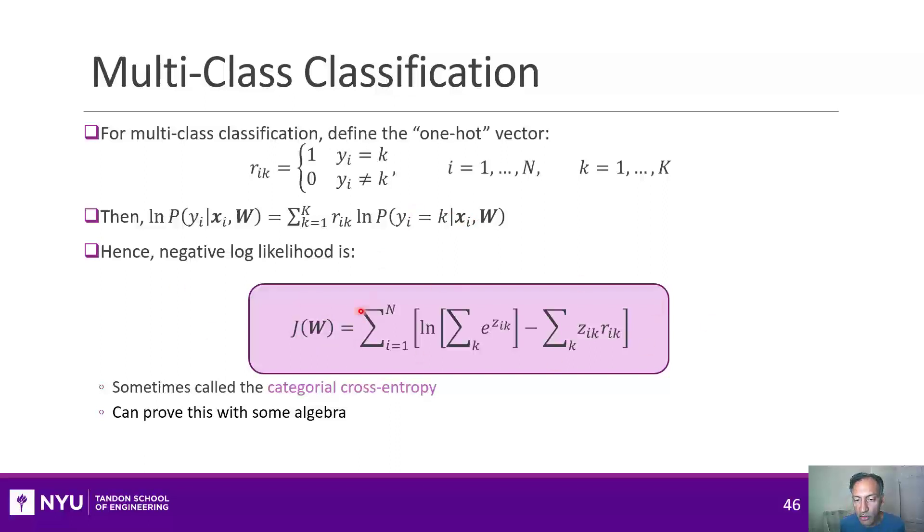And it's pretty similar in form, in that there's a log of a sum of exponentials, and then minus some other sum here. And this is sometimes called a categorical cross entropy. So for binary classification, we have the binary cross entropy. And for multi-class classification, we have categorical cross entropy. And I don't want to waste the time going through this derivation, just so you understand these two functions.